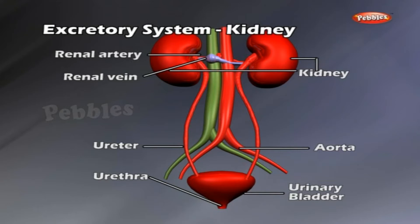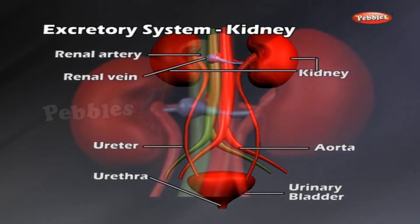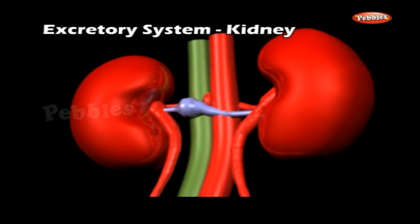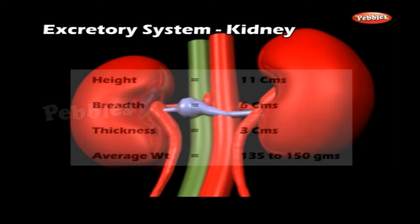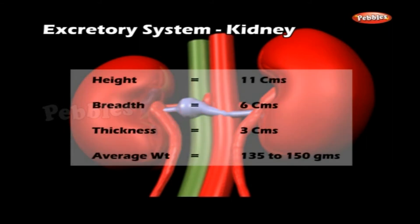The kidneys are reddish-brown, bean-shaped structures placed on either side of the vertebral column in the lumbar region. The right kidney is placed at a lower level than the left because of the liver. Each kidney is about 11 cm in length, 6 cm in breadth and 3 cm in thickness. The average weight of the kidney is 135 to 150 grams.